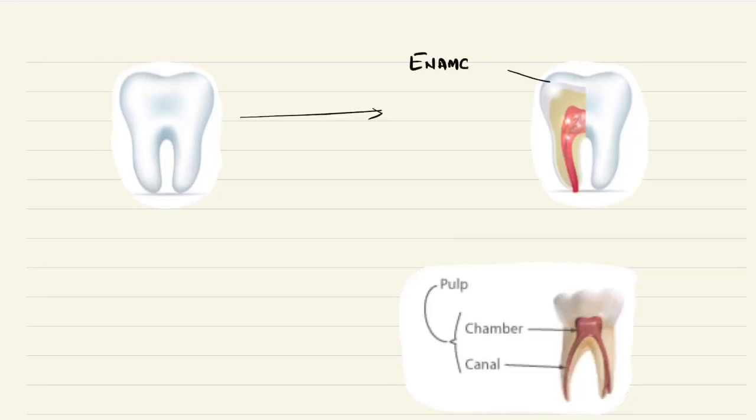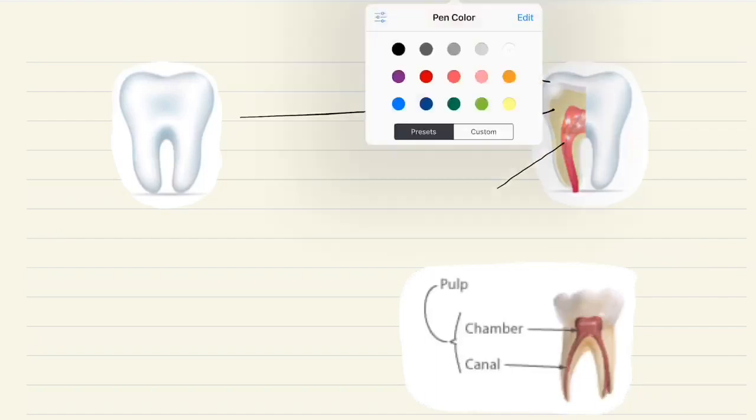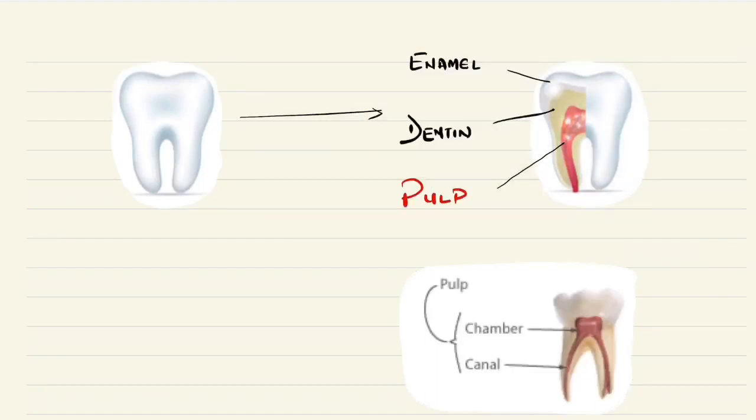When we see a tooth, it is composed of enamel, dentin, and on the inside is the pulp. Now this pulp tissue in the tooth is divided into two components: one is into the chamber of the tooth, which is referred to as the coronal pulp, and second is into the root canals.